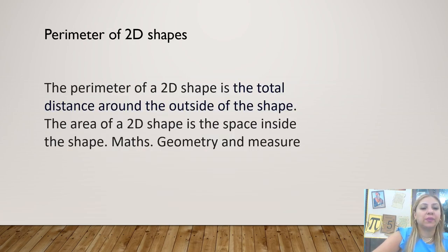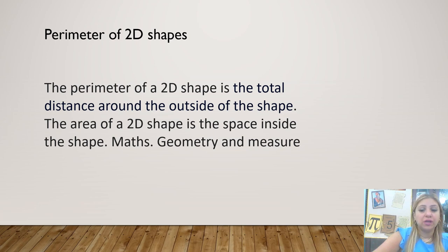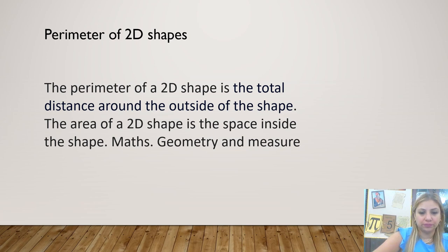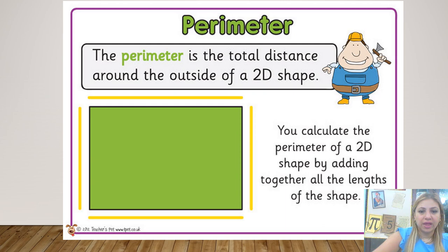Also, we learn about how to find the perimeter of 2D shapes. The perimeter of a 2D shape is the total distance around and outside of the shape. The area is the inside, and the outside is the perimeter. The area of a 2D shape is the space inside the shape. The perimeter is the total distance around the outside of a 2D shape. You calculate the perimeter of a 2D shape by adding together all the lengths of the shape. Have a lovely week!